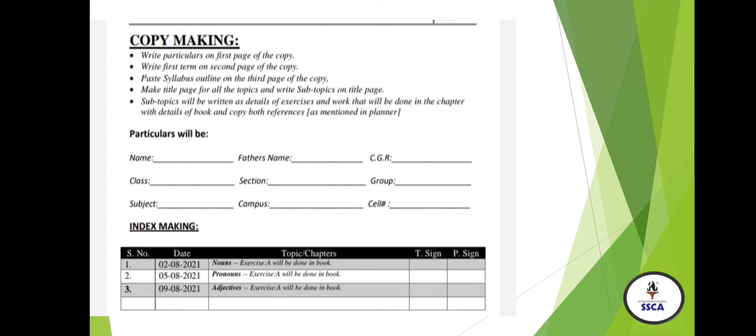Index making. In the index, you have three columns which you have to fill. Number 1: serial number — you have to put the serial number, for example, number 1. Then you have to put the date. And then you have to put the topic or chapter number with exercises.